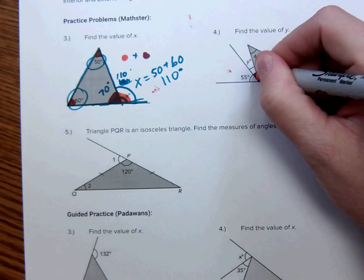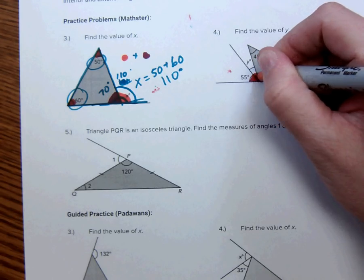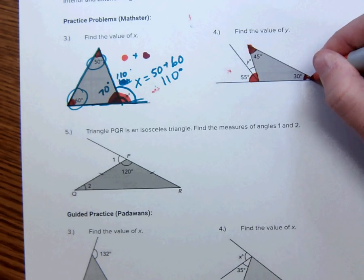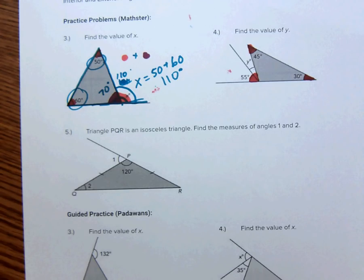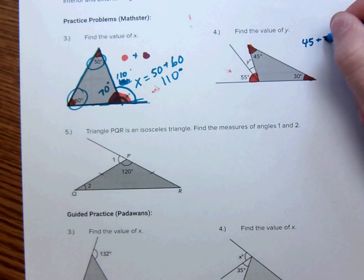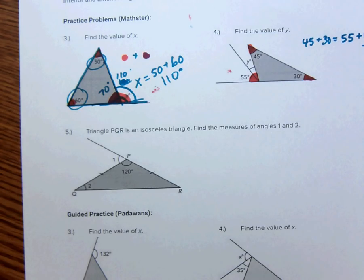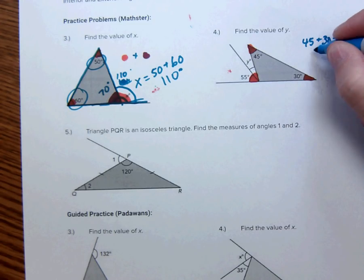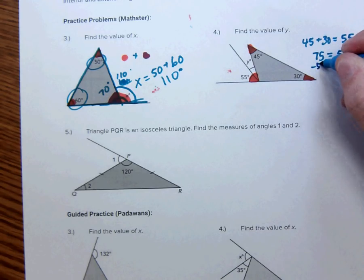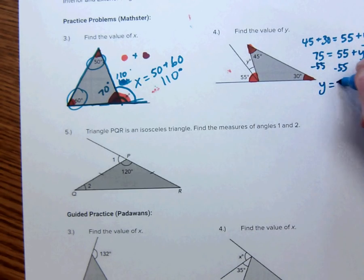That means that this right here, the whole thing, is the same thing as this plus that. So, this means that 45 plus 30 is equal to 55 plus Y. So, now we only have one unknown. We need to solve for Y. Let's combine like terms here. 45 plus 30 makes 75. So, 75 is equal to 55 plus Y. Subtract 55. I get Y is equal to 20 degrees.